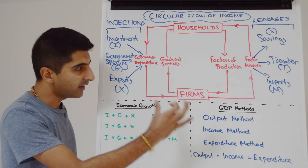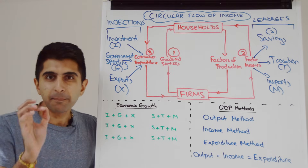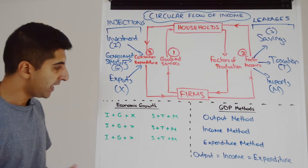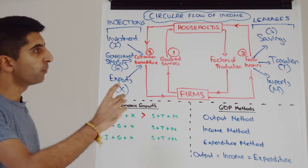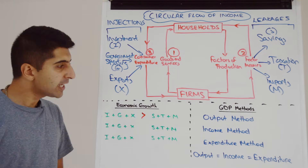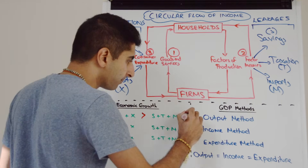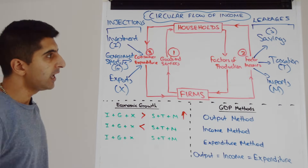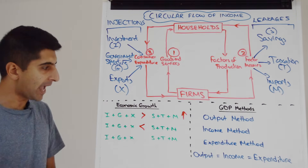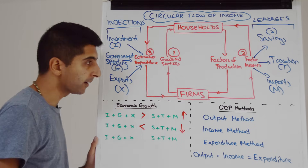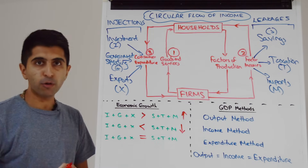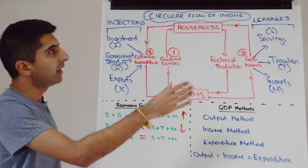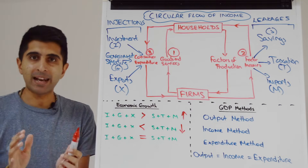By comparing the level of injections and leakages, we can show whether the economy is growing or not. If injections are greater than leakages, more money is entering the economy than is leaving it, so economic growth is rising. If injections are less than leakages, more money exits than enters, so economic growth is decreasing. If the two are equal, economic growth is neither increasing nor decreasing — we call that macroeconomic equilibrium.